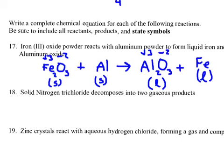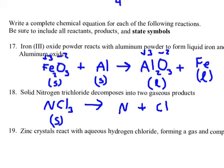Solid nitrogen trichloride, NCl₃. It decomposes — that means I don't add anything to it. It says into two gaseous products. There's only two things I can get: it decomposes into N and Cl. Uncombined element alert — check for pesky sevens: nitrogen is a pesky seven and chlorine is a pesky seven. And I was told they are both gaseous, so I write a g underneath each of them.